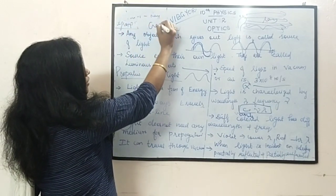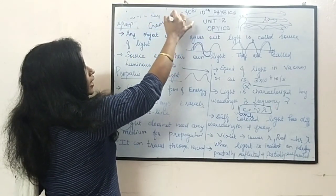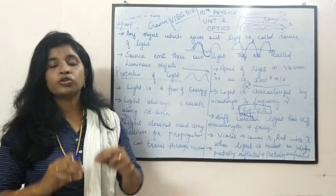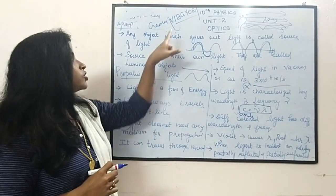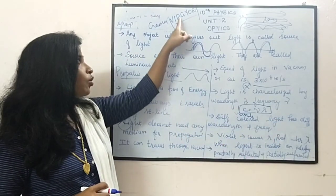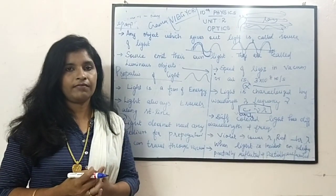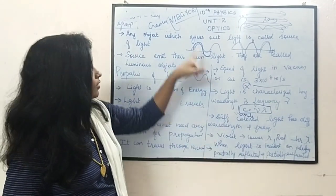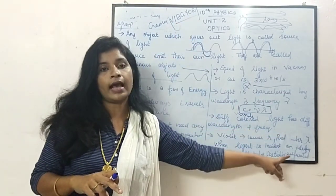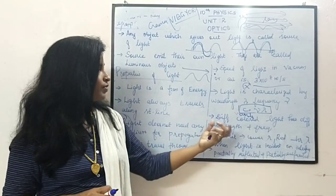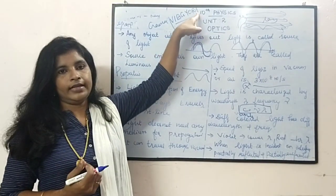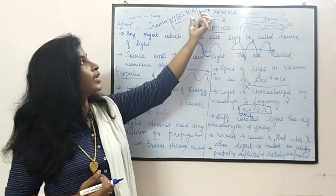Violet is the first visible color and it is having the lowest wavelength. Red is having the highest wavelength. Which is having the lowest wavelength — violet. Which is having the highest wavelength — red. Always keep this in mind.